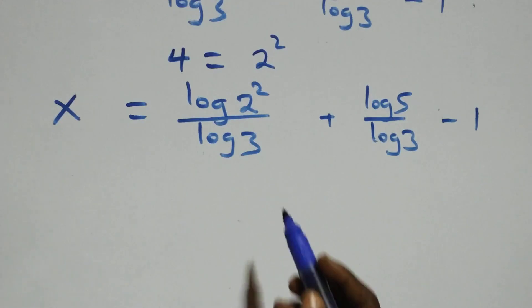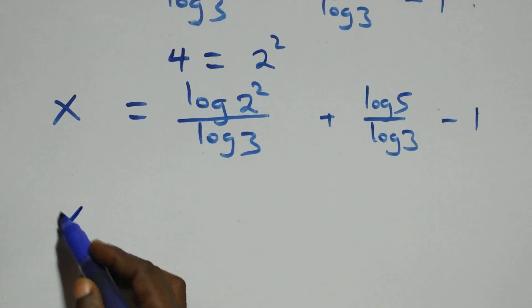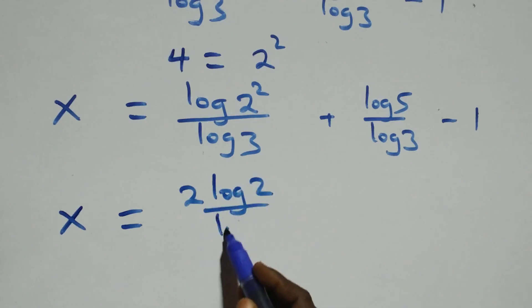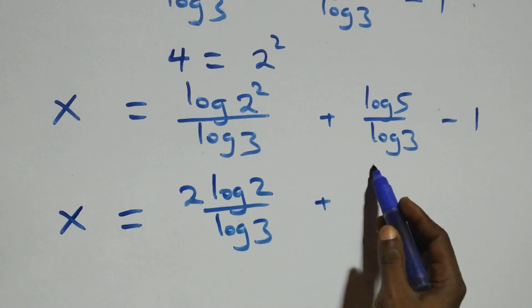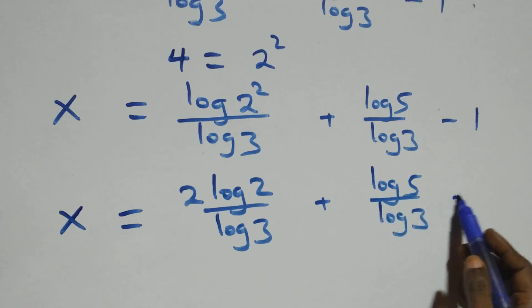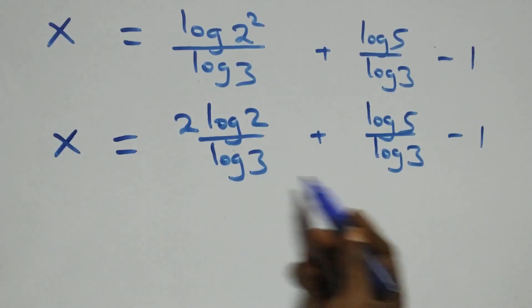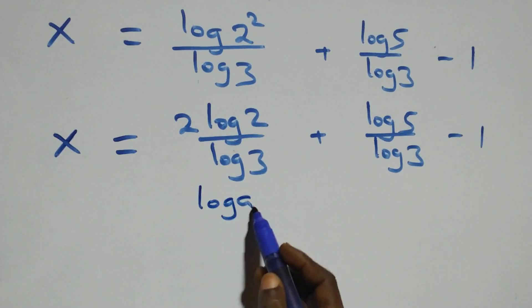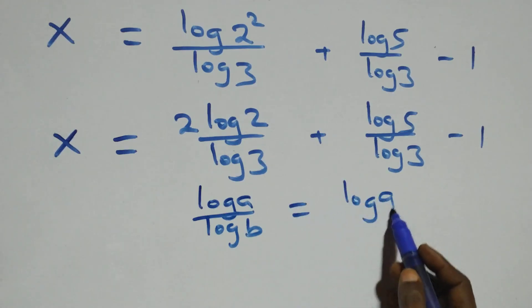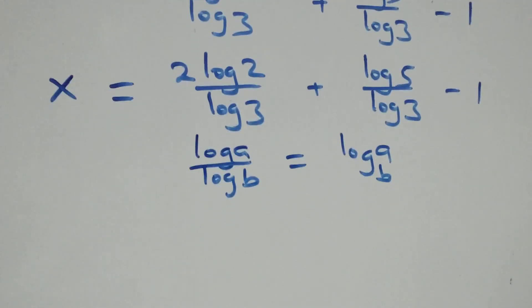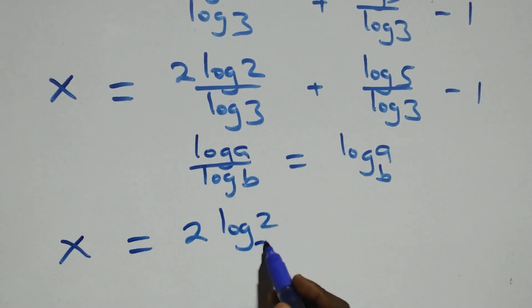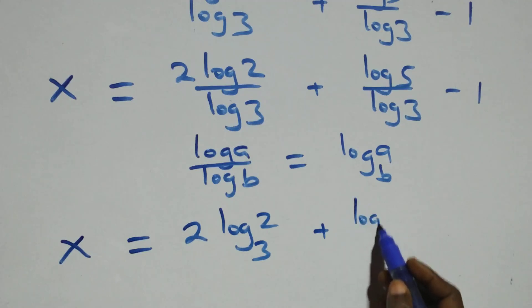We apply the change of base rule and the power rule of logs. Recall that log a over log b is the same as log a to base b. So all we have becomes x equals two log two base three, plus log five base three, minus one.